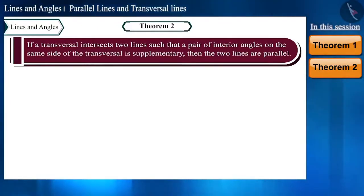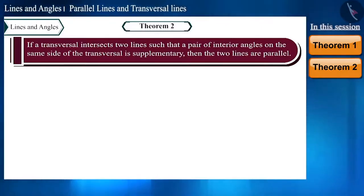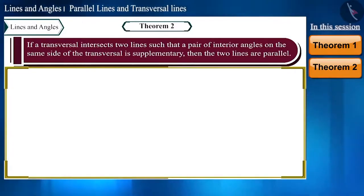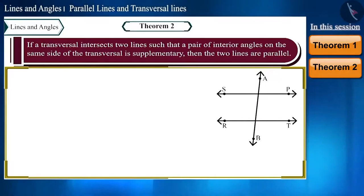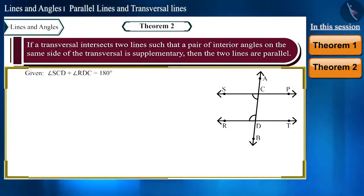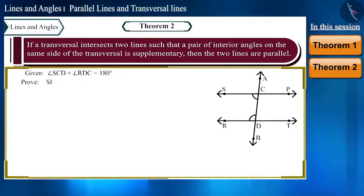Let's draw a figure. Here transversal AB intersects the two lines SP and RT at points C and D respectively, in such a way that the sum of these two interior angles is 180 degrees. With the help of this, we have to prove that lines SP and RT are parallel.